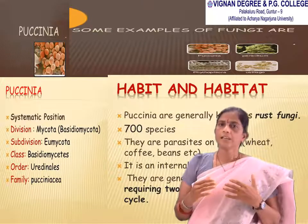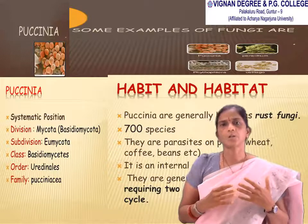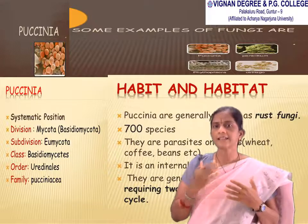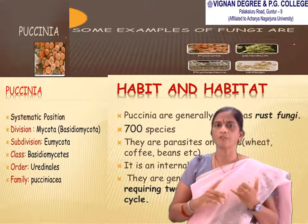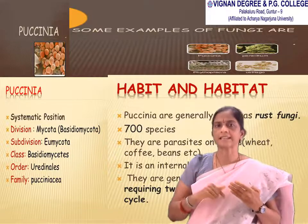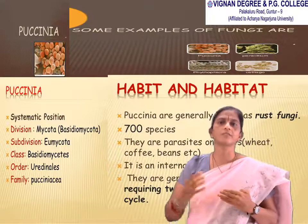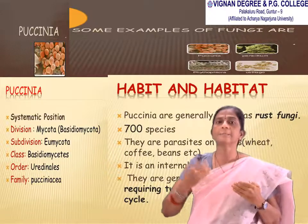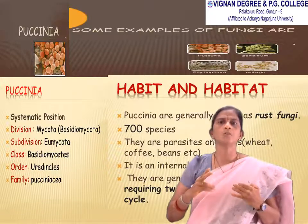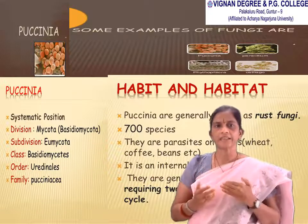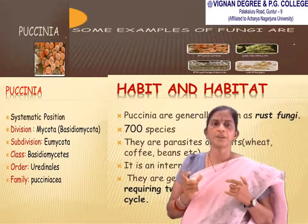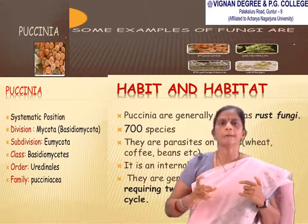Puccinia is generally known as rust fungi, consisting of 700 species. They are parasites on plants, affecting wheat, coffee, and beans. They are internal obligate parasites and plant pathogens. They are heteroecious, requiring two hosts to complete their life cycle. Puccinia belongs to the class Basidiomycetes and family Pucciniaceae.